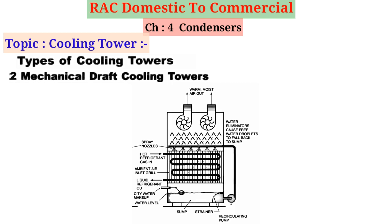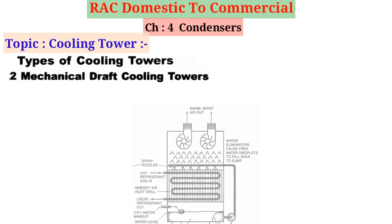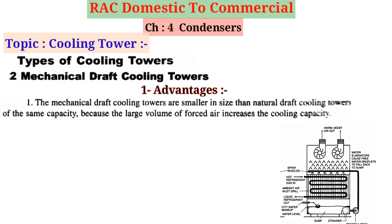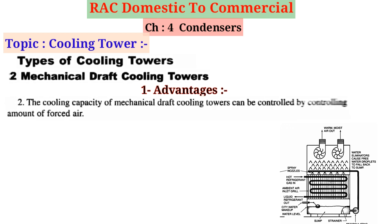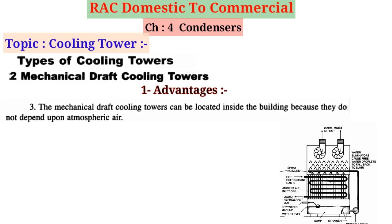Mechanical draft cooling towers are similar to atmospheric natural draft cooling towers except that fans are used to force air through them. These towers may use either propeller or centrifugal fans. The main advantages over natural draft towers are: 1. They are smaller in size for the same capacity because the large volume of forced air increases cooling capacity. 2. The cooling capacity can be controlled by controlling the amount of forced air. 3. They can be located inside a building because they do not depend upon atmospheric air circulation.